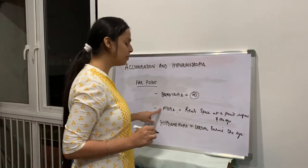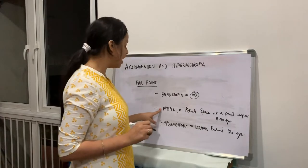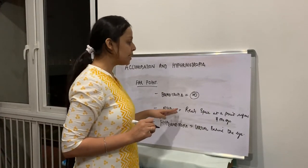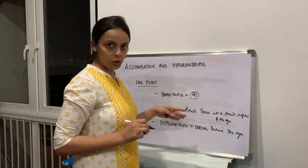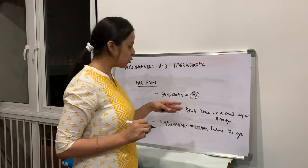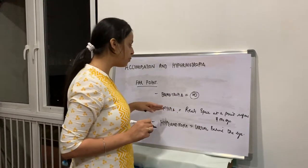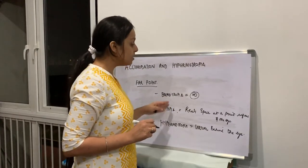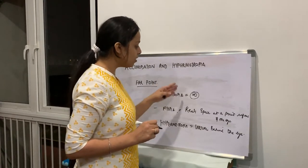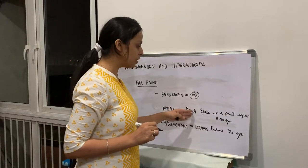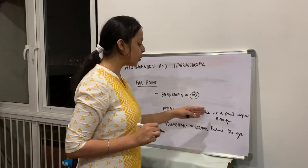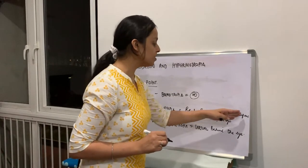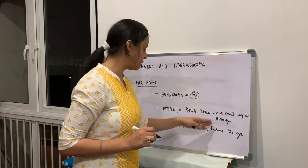Whereas in hypermetropia, this point is virtual and is located behind the eye. In emmetropia, rays of light coming from infinity form a distinct image on the retina when accommodation is at rest. In myopia, rays from infinity focus in front of the retina, so the Farpoint is a real point in space in front of the eye.